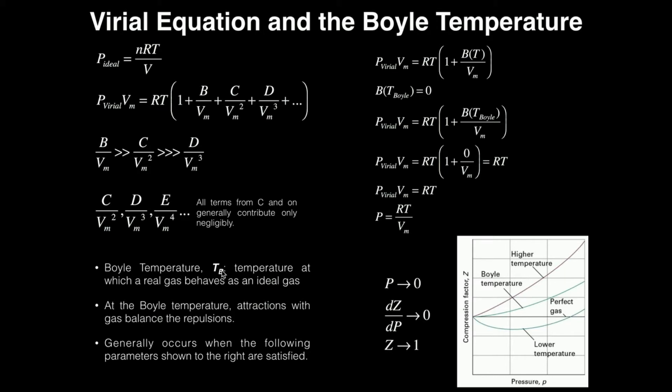But at the Boyle temperature, the behavior of that real gas should mimic that of the ideal gas. Now we're going to show here why this is the case using a simple derivation, and the derivation is going to be using the virial equation of state.